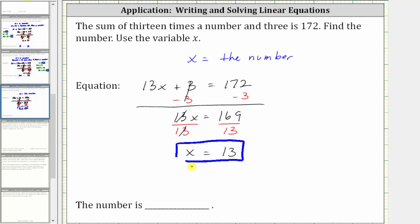Because x is the number we're looking for, the number is 13. But before we go, let's verify. If we substitute 13 for x, it does satisfy the original equation. We have the equation 13 times 13 plus three equals 172. 13 times 13 is 169, and 169 plus three is 172. 172 equals 172 is true, verifying the solution is correct.